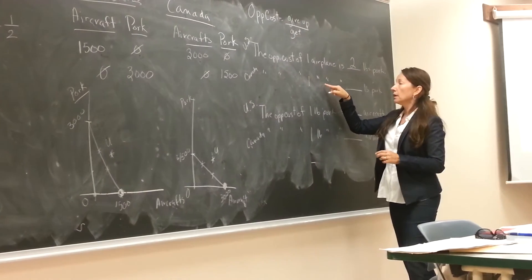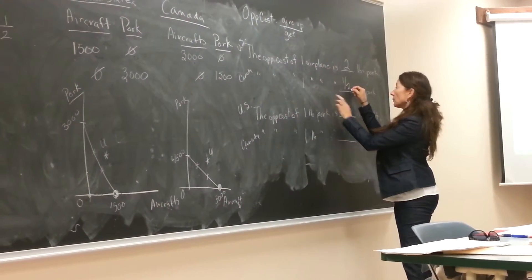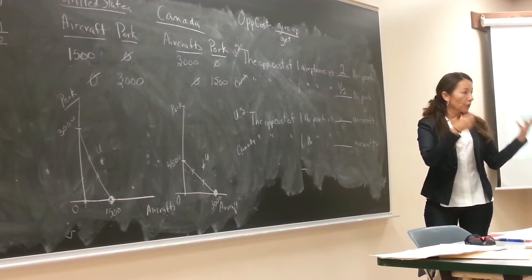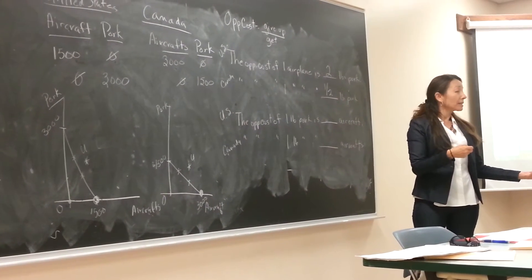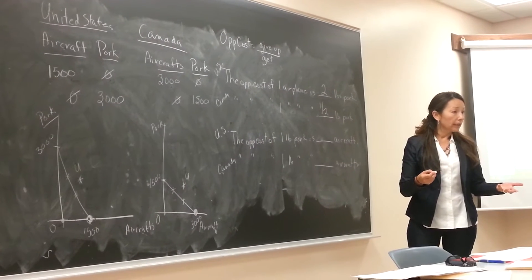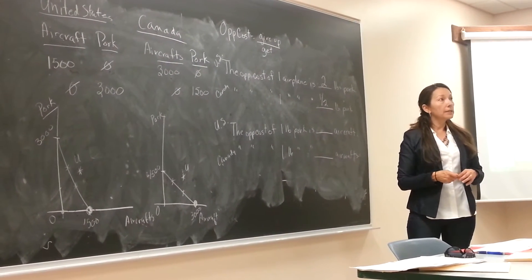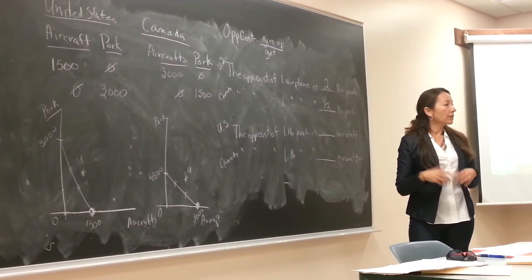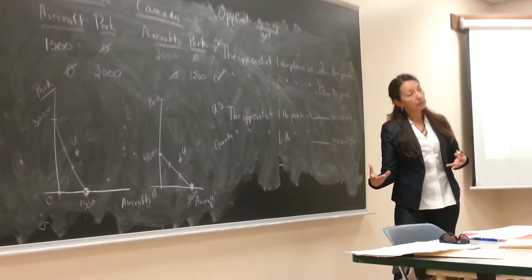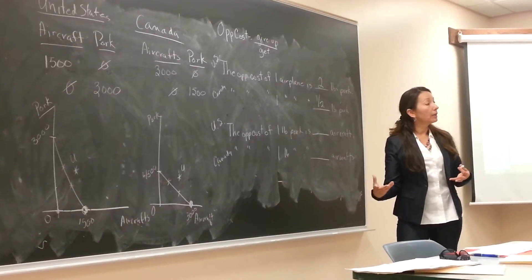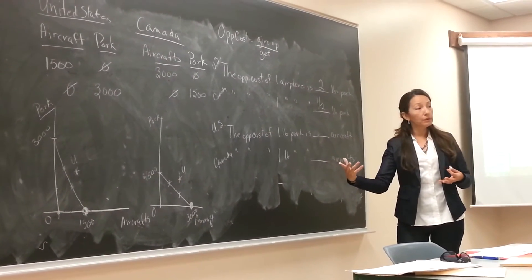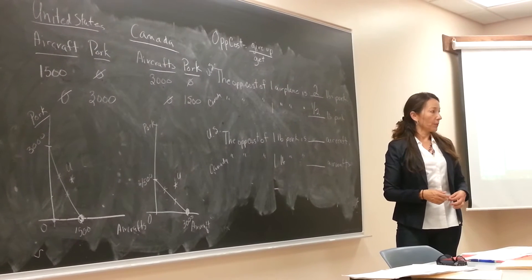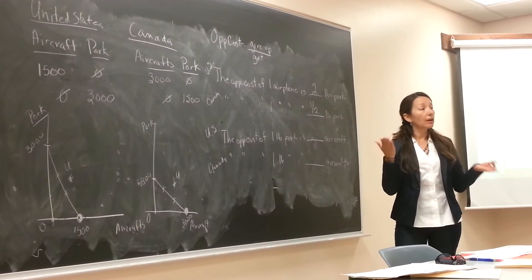We say the opportunity cost for Canada of one airplane is half a pound of pork. We're basically expressing the cost of something in terms of something else — we normally express the cost of something in terms of dollars. For example, if you want a $100 handbag and you're earning $10 an hour, you have to work 10 hours to buy that handbag. So you can say that handbag cost you 10 hours — we're just expressing cost in terms of what we're giving up.